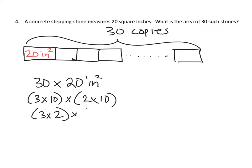Which gives us 6 times 100, which gives us 600 square inches. So that is the area of 30 of these stepping stones.